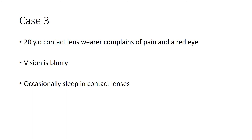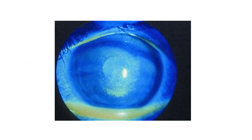For our final case, a 20-year-old contact lens wearer complains of pain and a red eye with blurry vision, and this person occasionally sleeps with their contact lenses. Here we can see punctate staining again, centrally located, which may be caused by overwear of the contact lenses. Contact lenses pose a specific risk to the cornea because oxygen cannot reach the epithelium due to the barrier created by the contact lens, allowing organisms such as bacteria to thrive.